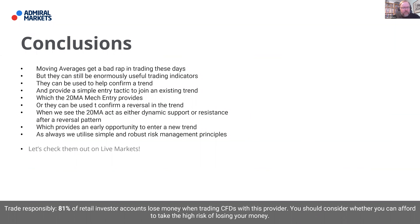In conclusion, moving averages get a bit of a bad rap in trading these days, but they can still be enormously useful trading indicators when kept simple. They can be used to confirm a trend and provide a simple entry tactic to join an existing trend — the 20 MA mechanical entry — or to confirm a reversal in the trend. When we see the 20 period moving average act as dynamic support or resistance after a reversal pattern, that provides an early opportunity to enter what might possibly be a new trend. As always, we utilize simple and robust risk management principles.